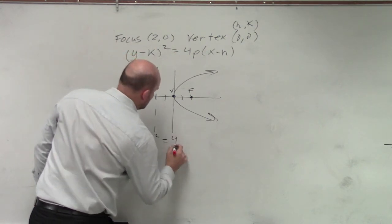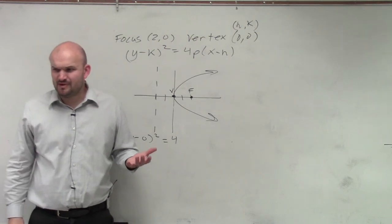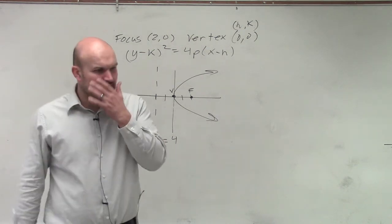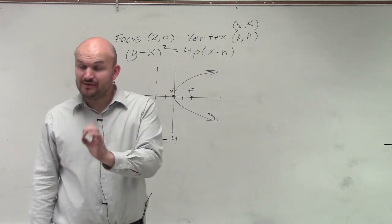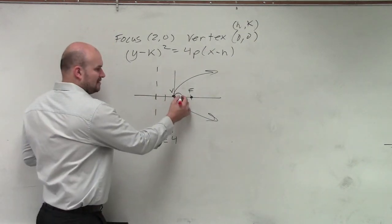The problem is we don't know what p is. Or do we? What does p represent again? p represents the distance from the vertex to the focus. How far is that? 2.